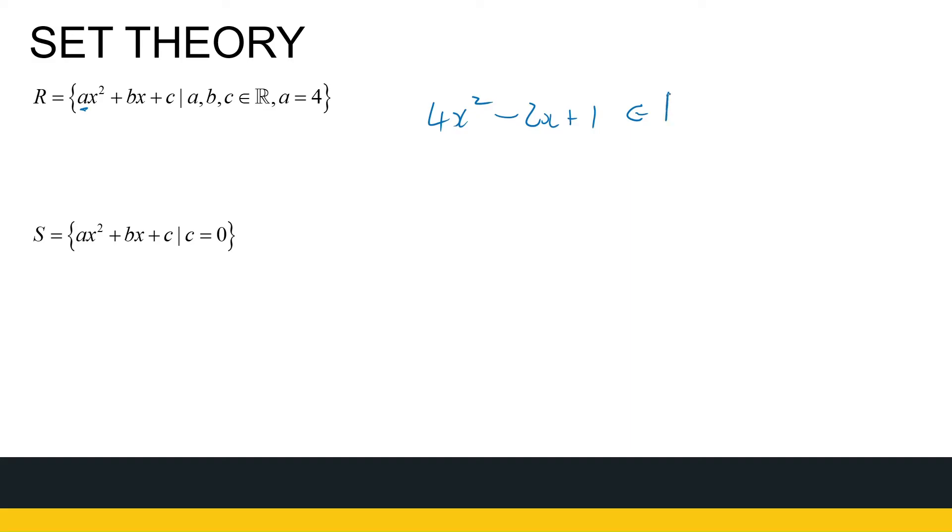So, 4x squared minus 2x plus 1. That's an element of R. Sorry, not the real numbers. The set R. 4x squared plus 7x minus pi. That's an element of R. Just 4x squared, is that an element of R? Well, if the B and the C portions are 0, yes, 0 is a real number. So, that's an element of R.